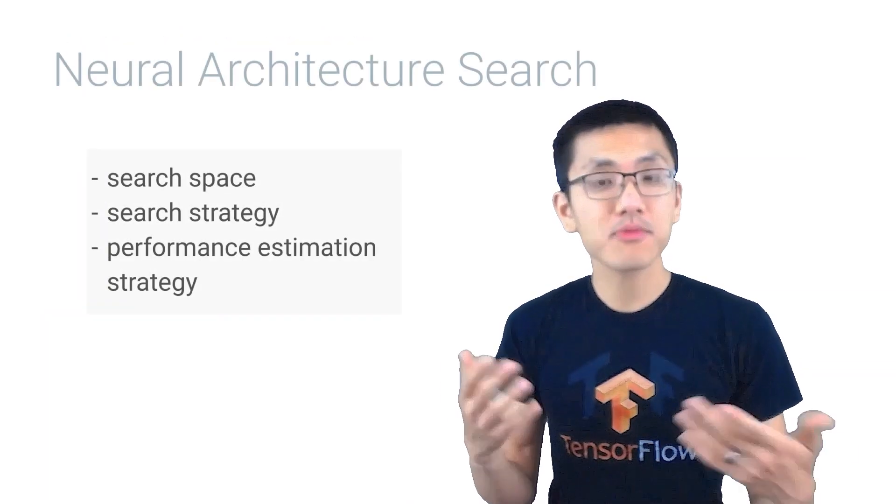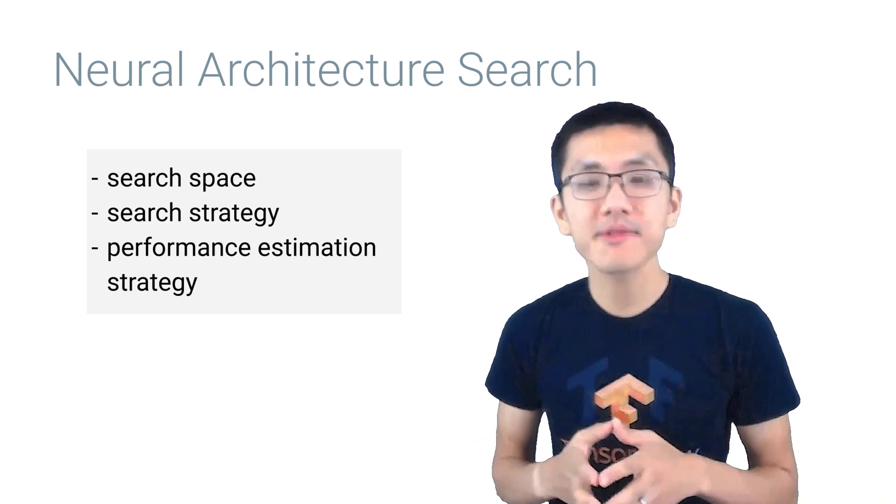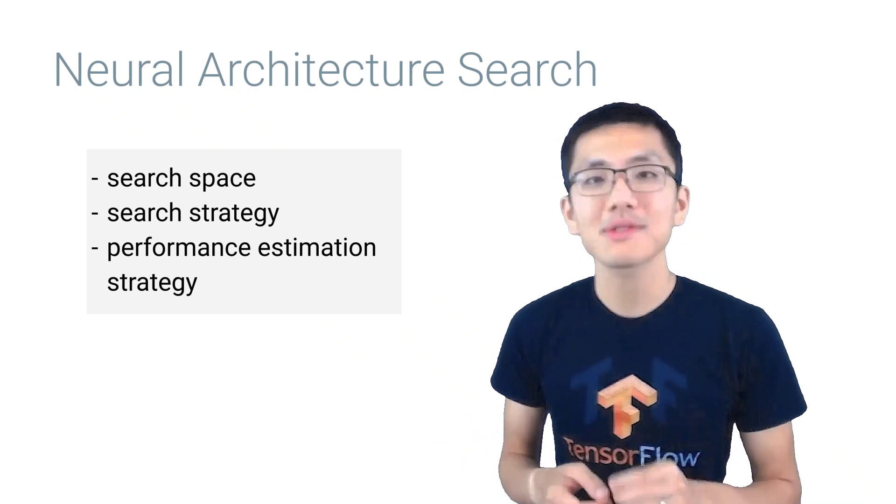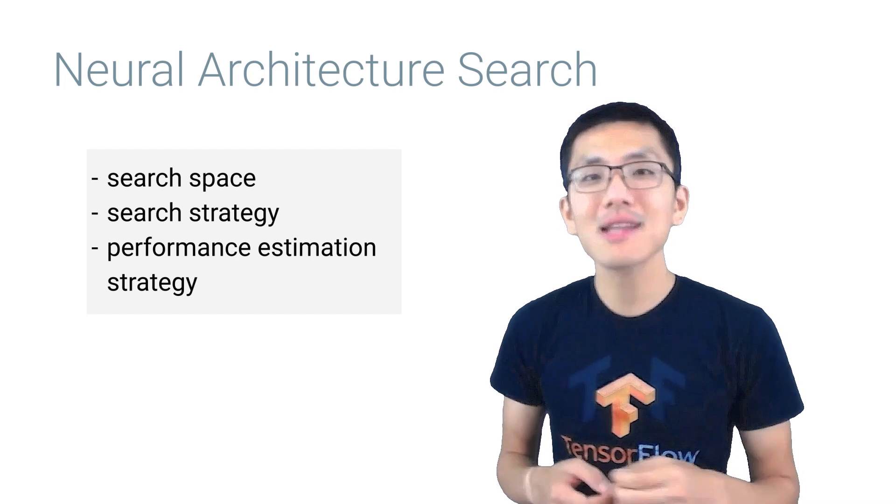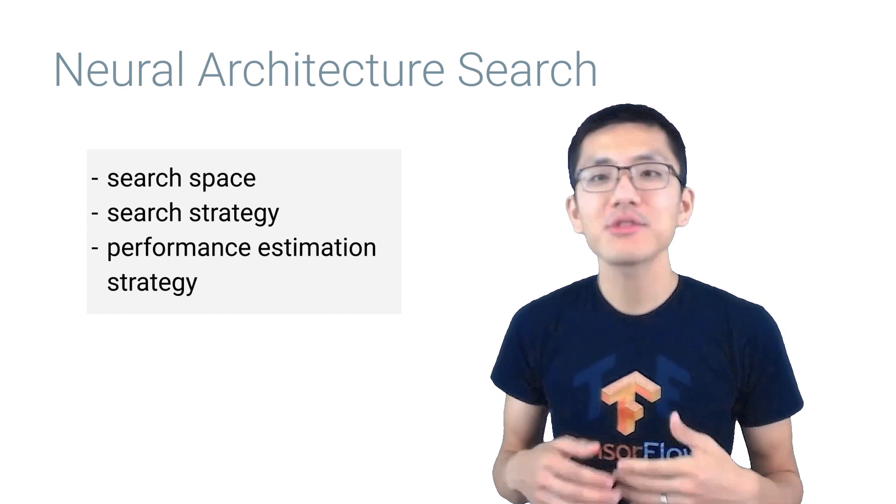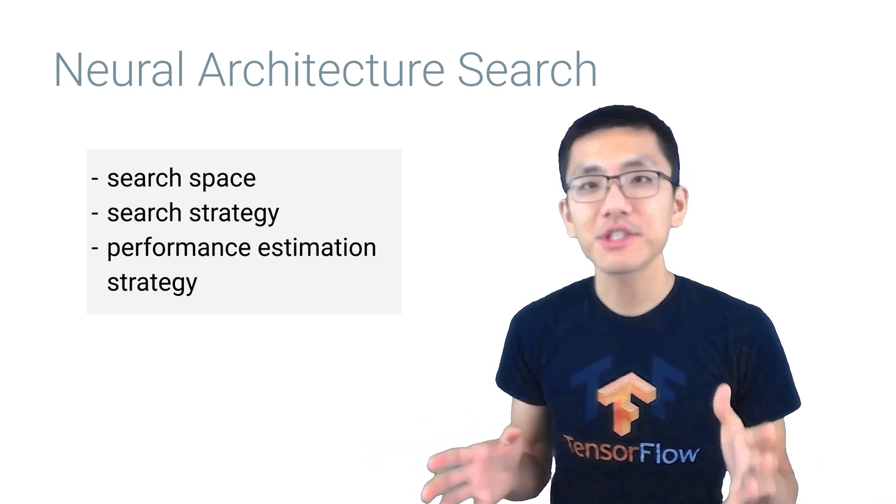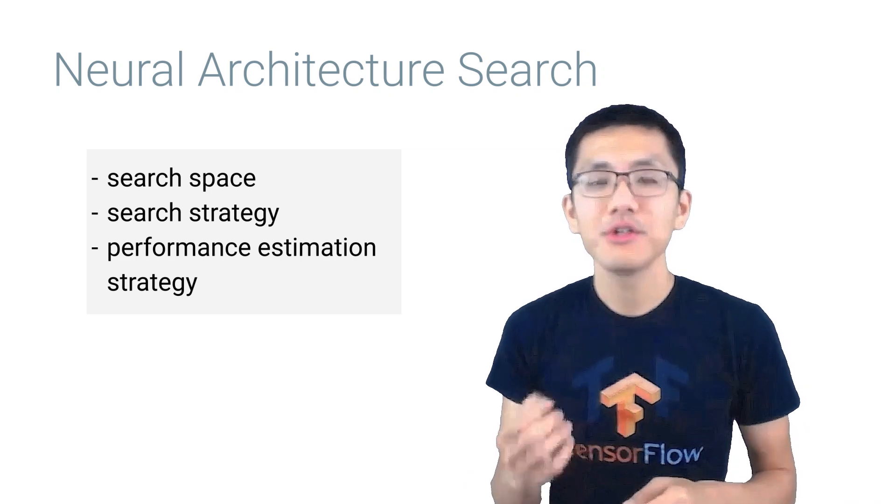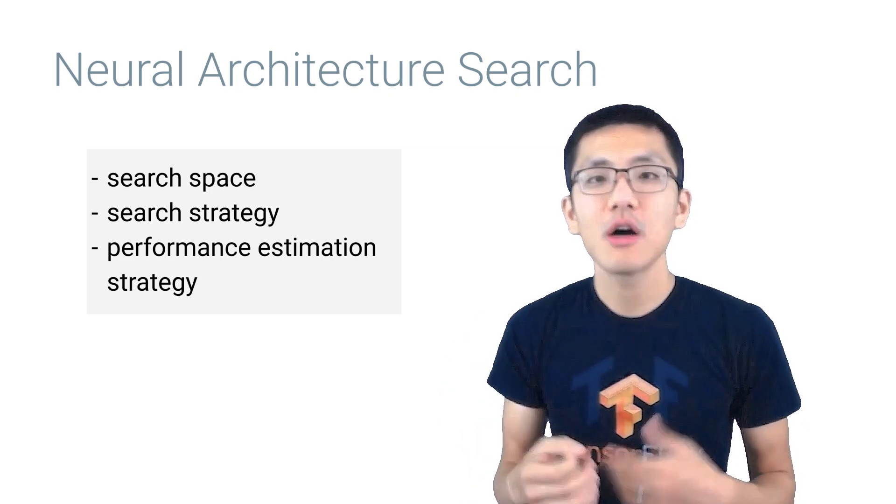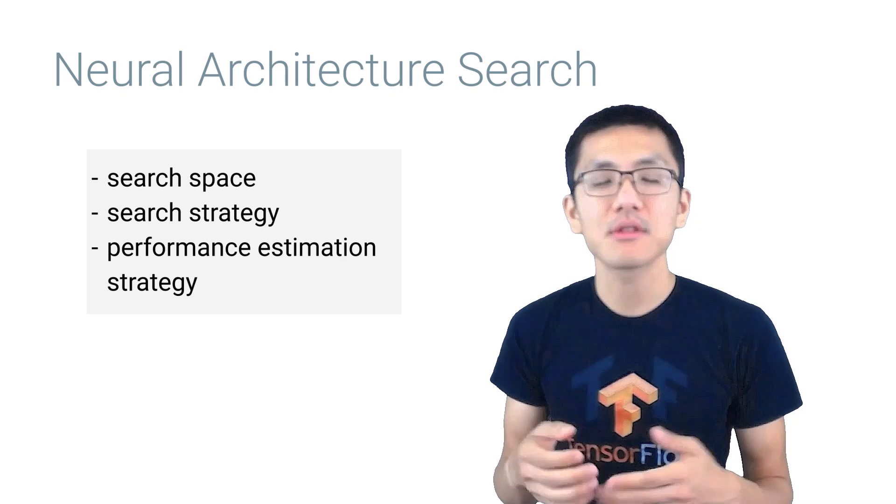Okay, so that was a broad overview of some of the types of tasks that automated machine learning tools can tackle. Now, let's dive into one particular area that has received the lion's share of research over the last few years: neural architecture search, often abbreviated as NAS.